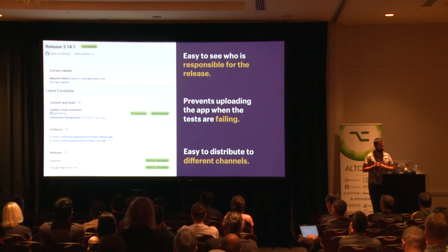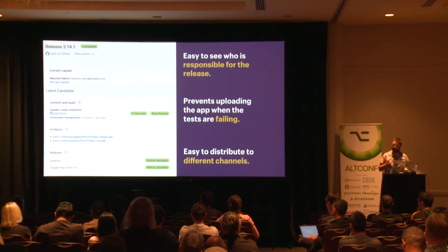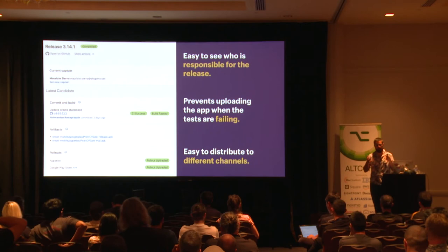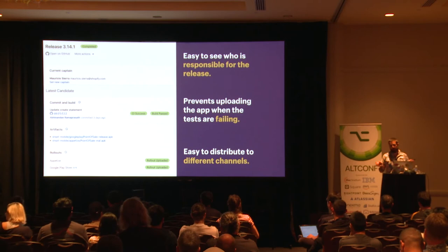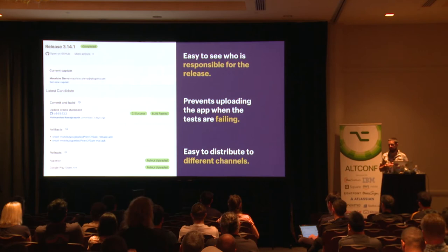You have a release view showing who is the captain—even though we automate things, it's important to have one person making decisions. Every commit we build is called a candidate because it can potentially be released. The developer doesn't need to know anything about how we compile—we do it. If signing fails, we fix it. Developers are happy because they don't deal with these things themselves. When everything finishes, we export artifacts—APKs for Android—and you can roll out to Appetize, Google Play Store, TestFlight, or App Center from Microsoft. Just click, upload, done.